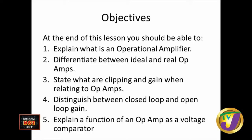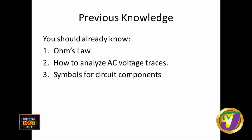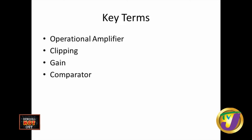The objectives are: at the end of this lesson you should be able to explain what is an operational amplifier, and the difference between real and ideal operational amplifiers. You will also be able to state what clipping and gain mean when relating to op-amps, distinguish between closed loop and open loop gain, and explain the function of an operational amplifier as a voltage comparator.